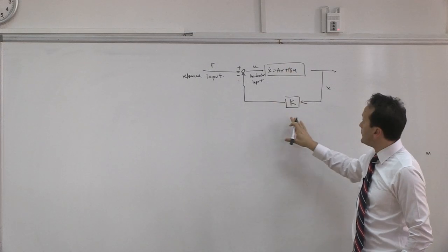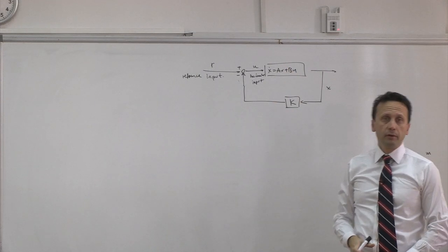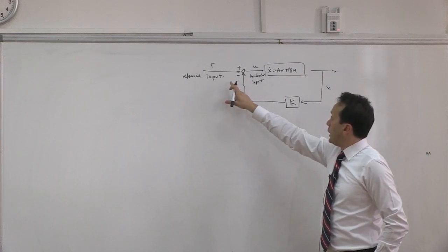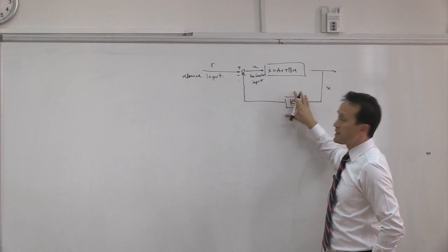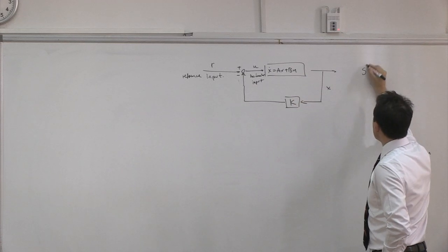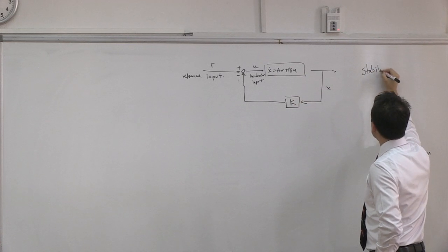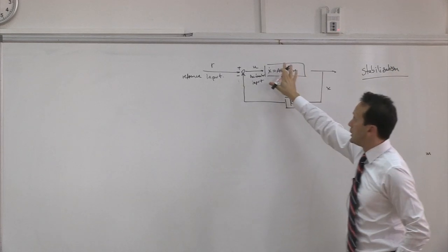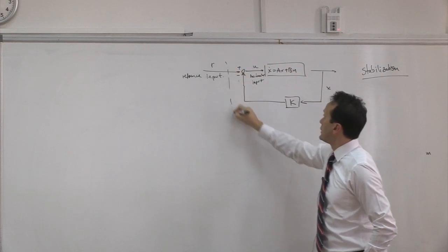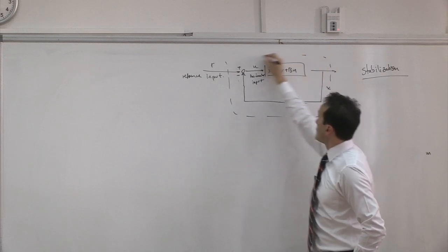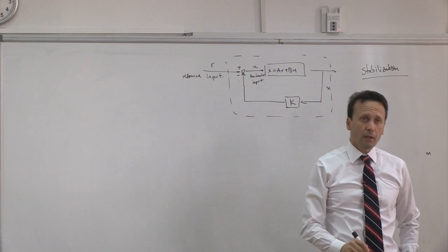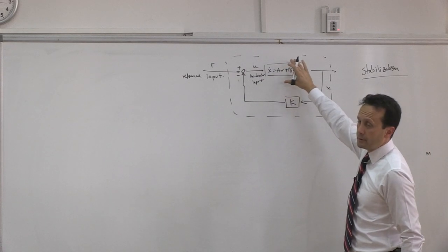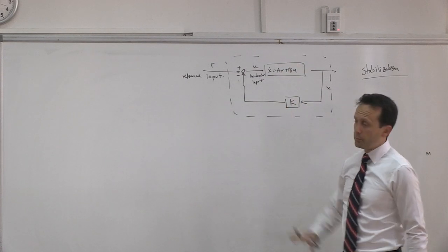The pilot would be sitting here, giving some inputs to the aircraft, and in between the controller would change his input in a certain way and send that input to the actuator — basically to the aileron, elevator, whatever — and that would go into the aircraft. This represents the airplane, although this is a linear model.